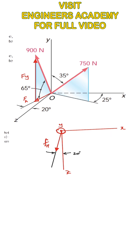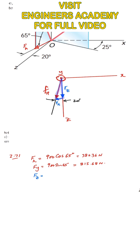We can resolve FH into two components: one component parallel to the Z axis, which we call FZ, and one component parallel to the X axis, which we call FX. As we can show here, FZ is along the Z axis, and the other component is in the negative X direction. The angle is made with FZ, so FZ is the cosine component of FH.